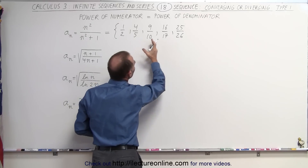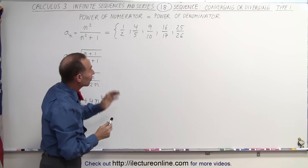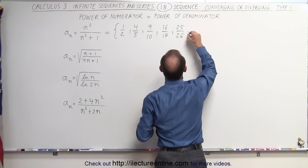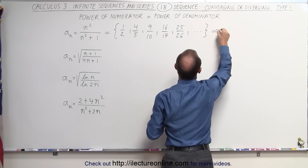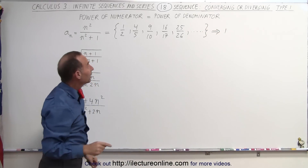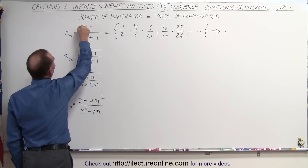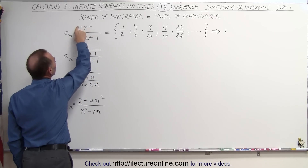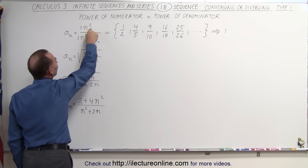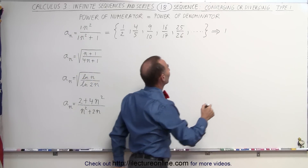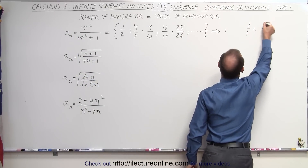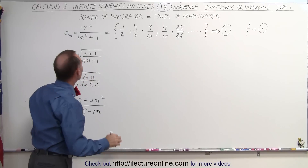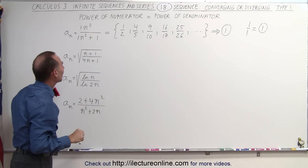As the numbers increase, going further down the sequence, the number seems to be converging to 1. So the sequence eventually converges to 1. Another way to determine that is to look at the coefficients — here we have 1 and there we have 1 — so the limit equals the ratio of the coefficients of the terms with the highest power of n, giving us 1 over 1, which is 1.